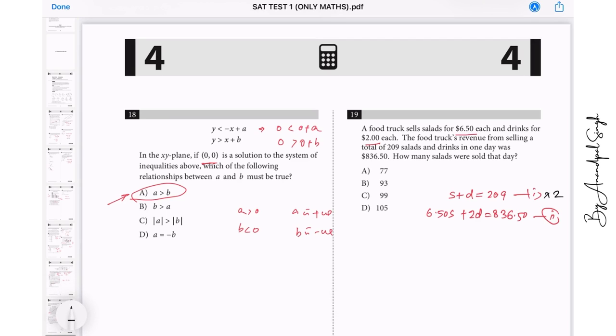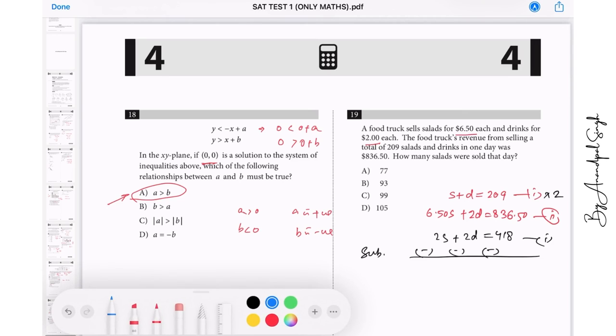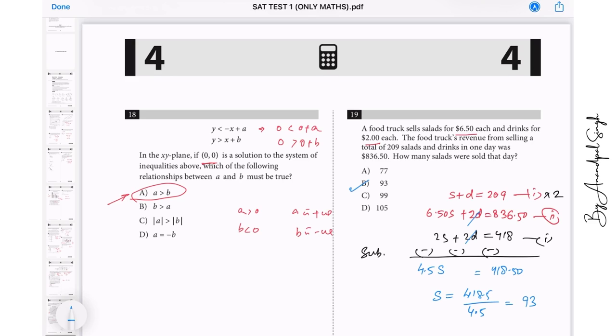So just multiply the first equation by 2. So the first equation becomes 2s plus 2d is equal to 418. Then we subtract it, so sign gets changed, this gives you 4.5s and these two will cancel out, you get this as 418.50. Then s is equals to 418.5 divided by 4.5. So I'm just using my calculator now, so my calculator is 418.5 divided by 4.5 is giving me 93. So the right answer is 93, it means B is the correct answer.